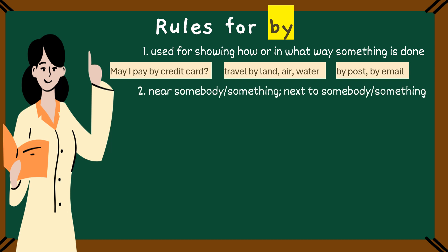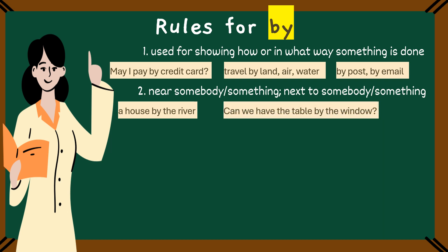Next rule: near or next to someone or something. By can show something that is near or next to another thing. There is a house by the river. It means the house is located next to the river. Next example: can we have the table by the window? This means they wanted the table close to or near the window.